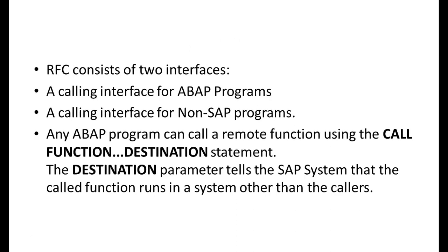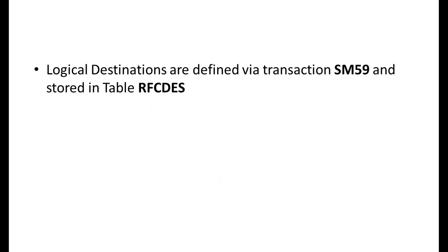RFC consists of two interfaces: a calling interface for ABAP programs, and a calling interface for non-SAP programs. Most of the time RFC is used for SAP-to-SAP systems, but it can also be used with non-SAP systems. Any ABAP program can call a remote function call with a CALL FUNCTION ... DESTINATION statement. The destination parameter tells the SAP system that the called function runs in a system other than the caller's. Logical destinations are defined via transaction SM59 and stored in the RFC destination table.